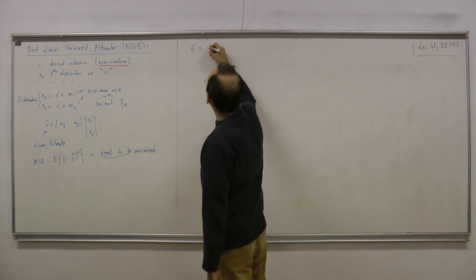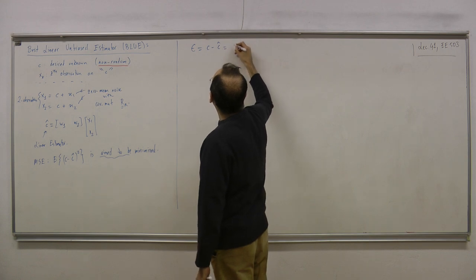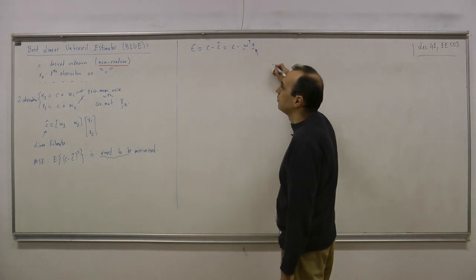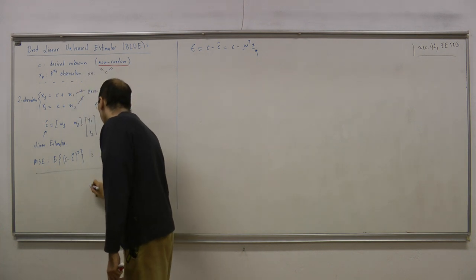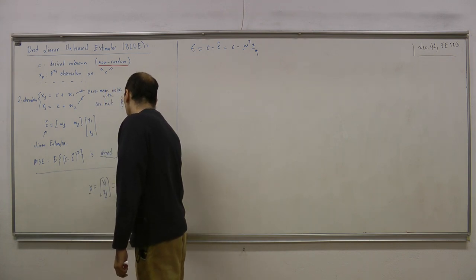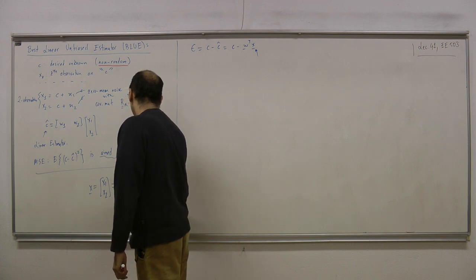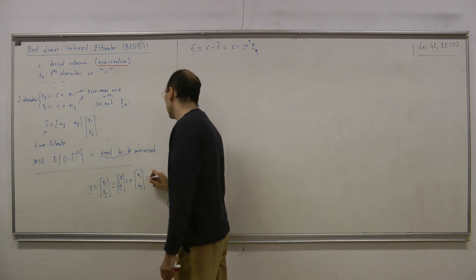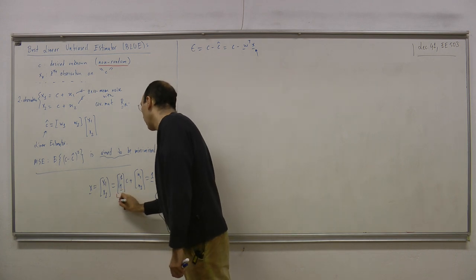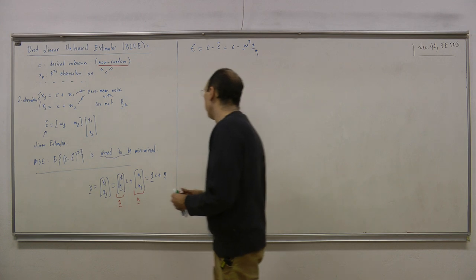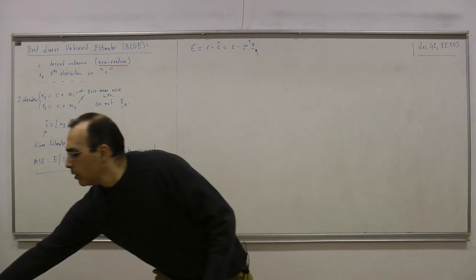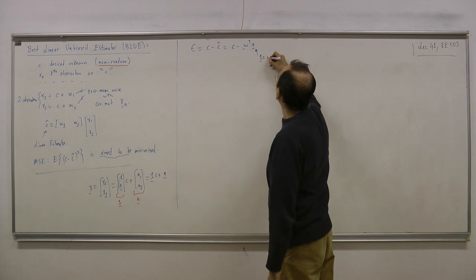Let's define the error as ε = C - Ĉ = C - W^T X. The observation vector X = [X1, X2]^T can be written as the vector of ones times C plus the noise vector N: X = [1, 1]^T C + [N1, N2]^T.